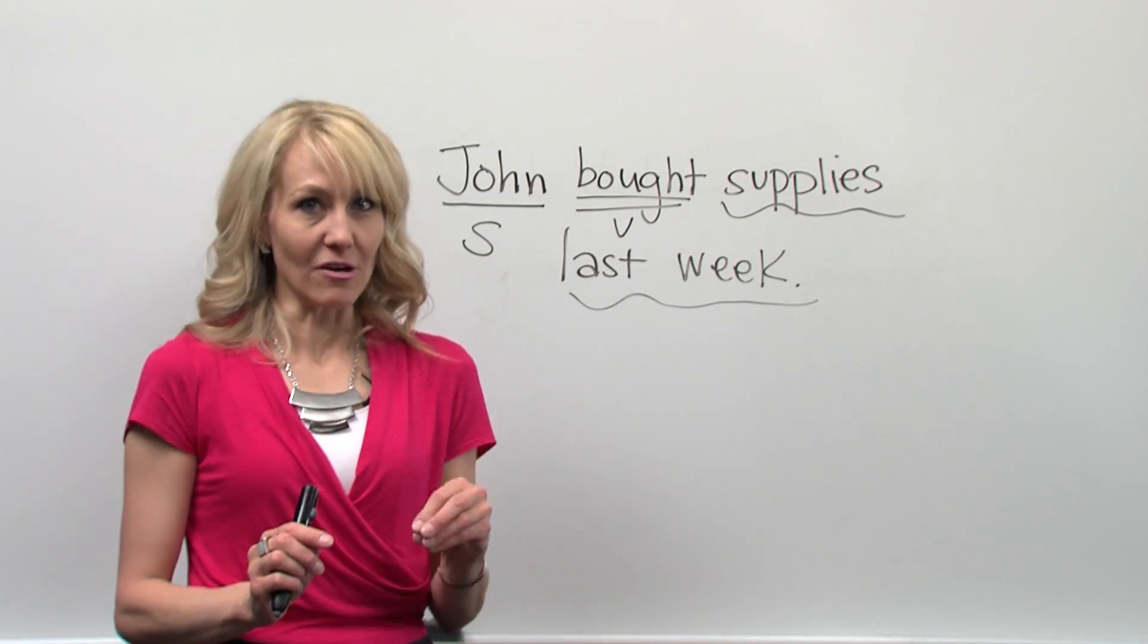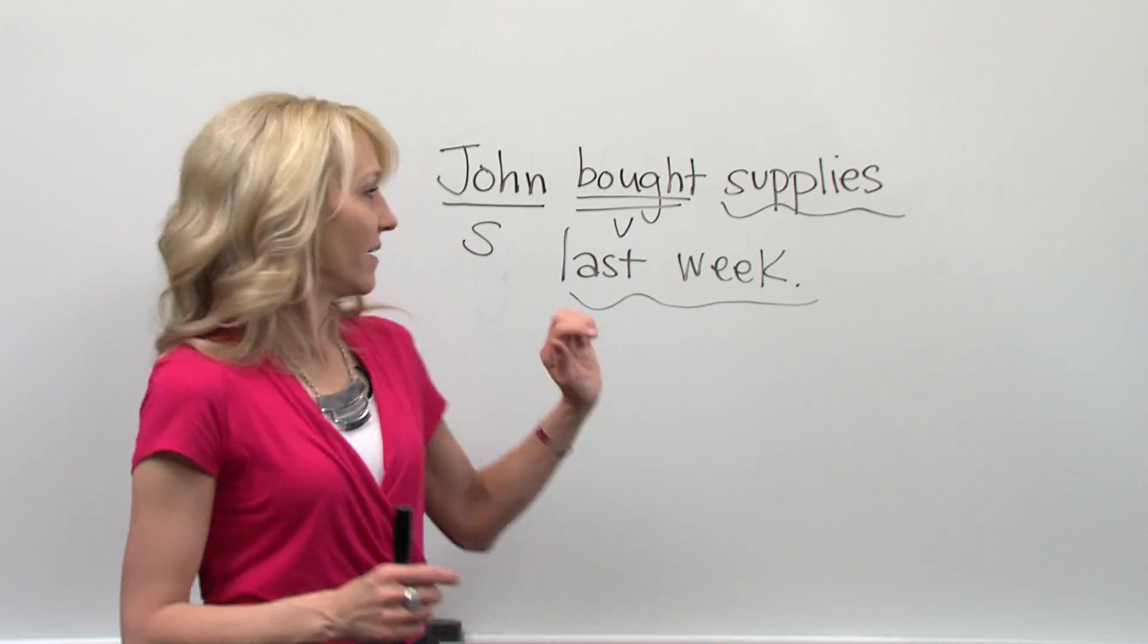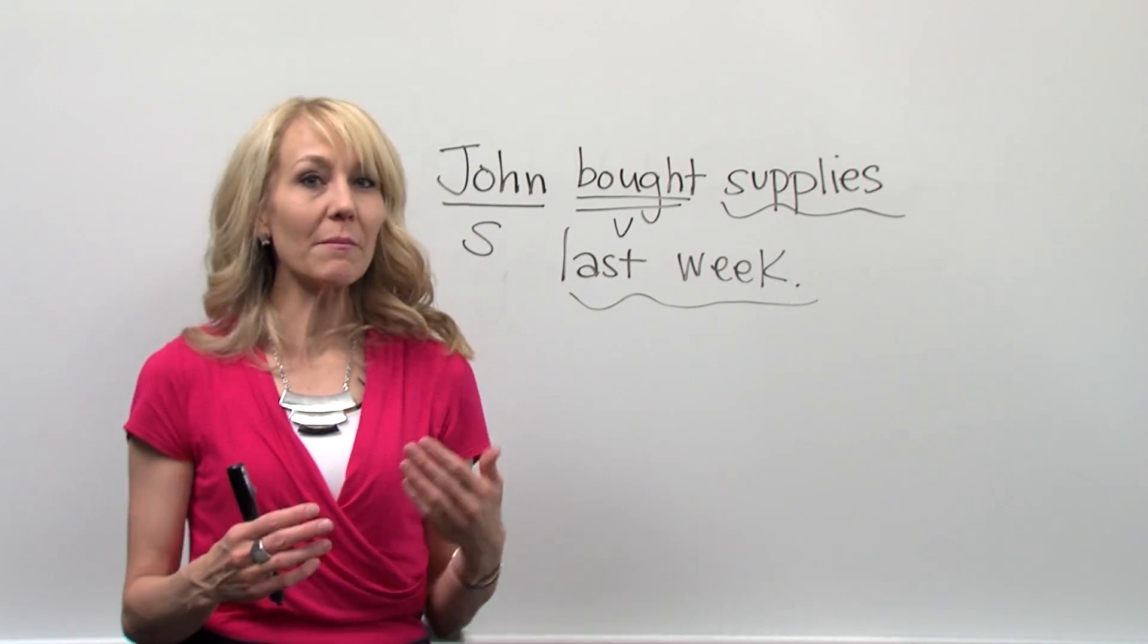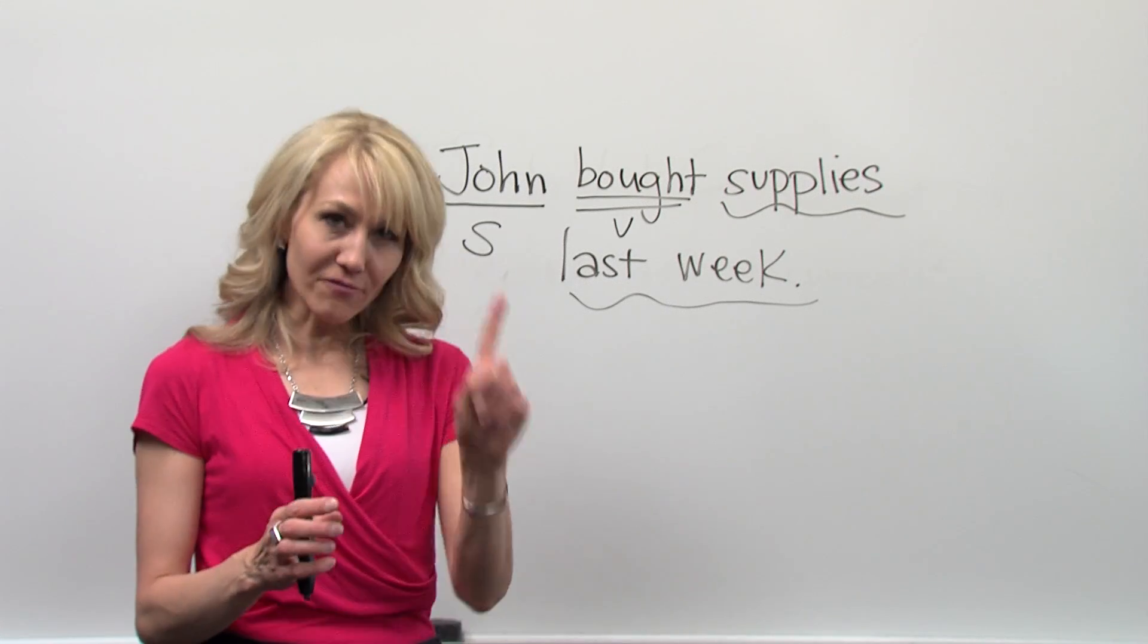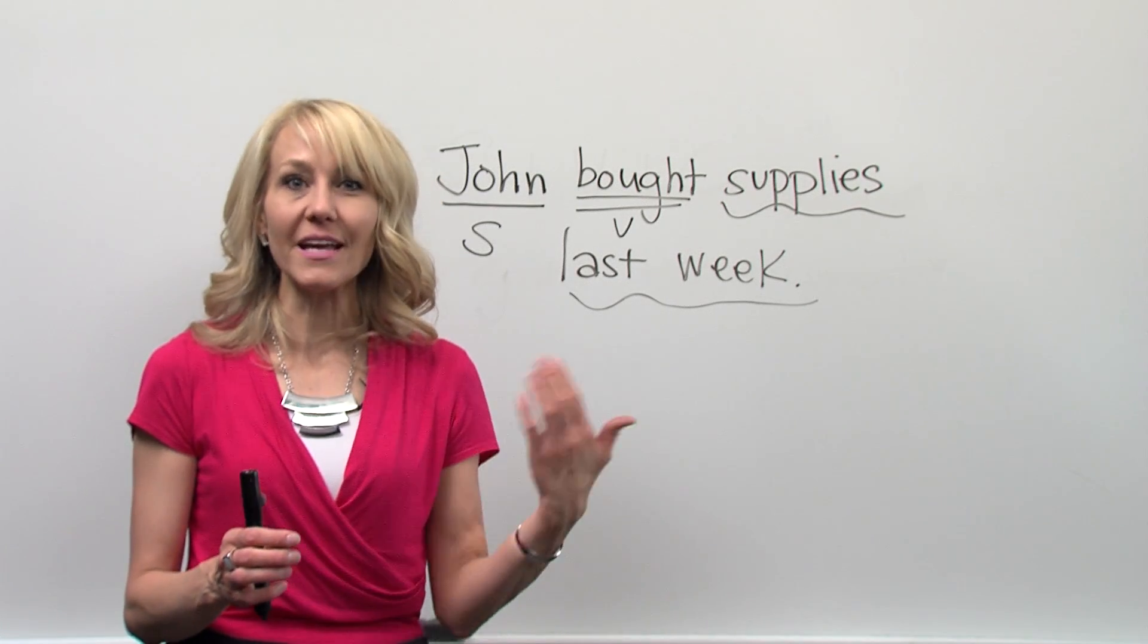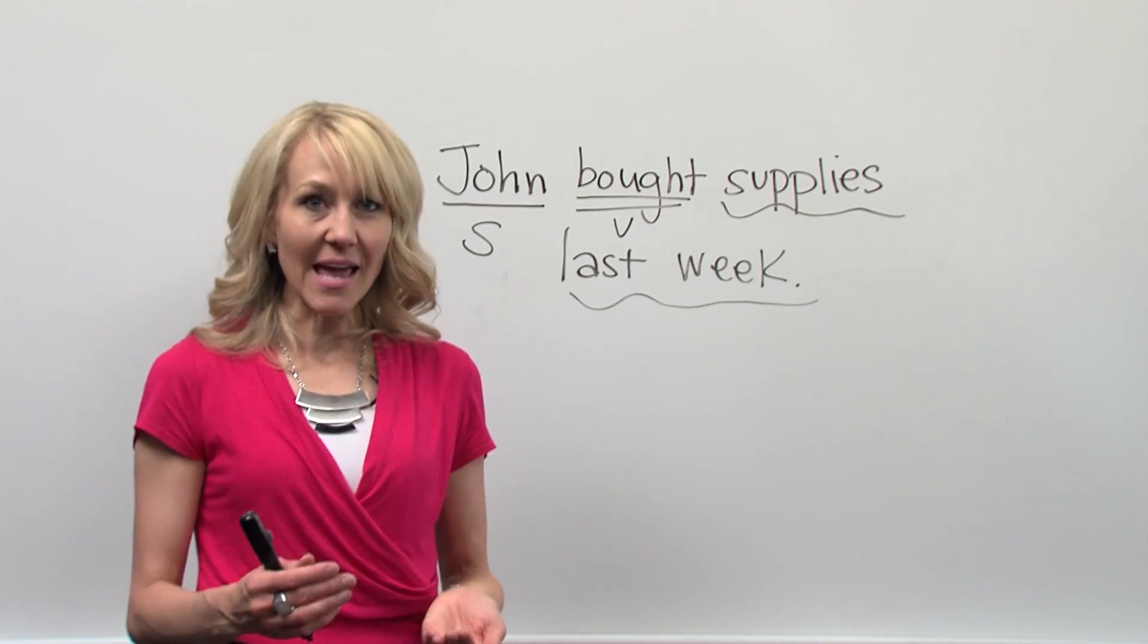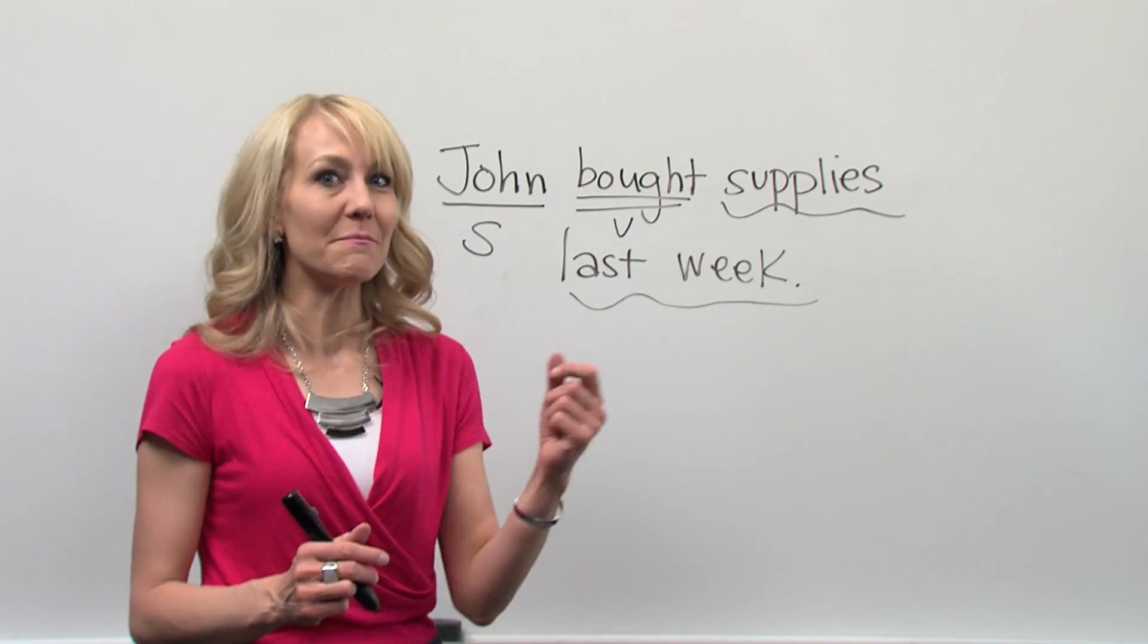Now, let me point something out. I might have two main subjects or two main verbs in the sentence. Again, first step: identify your main subject and identify your main verb. So let me add in a compound main subject.